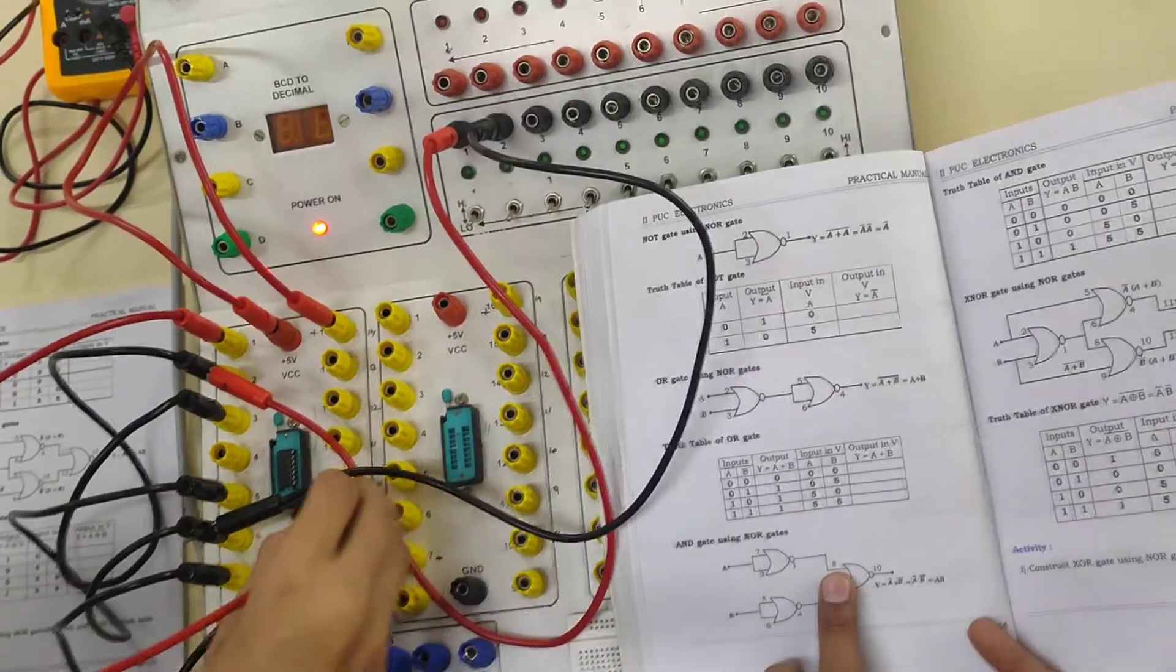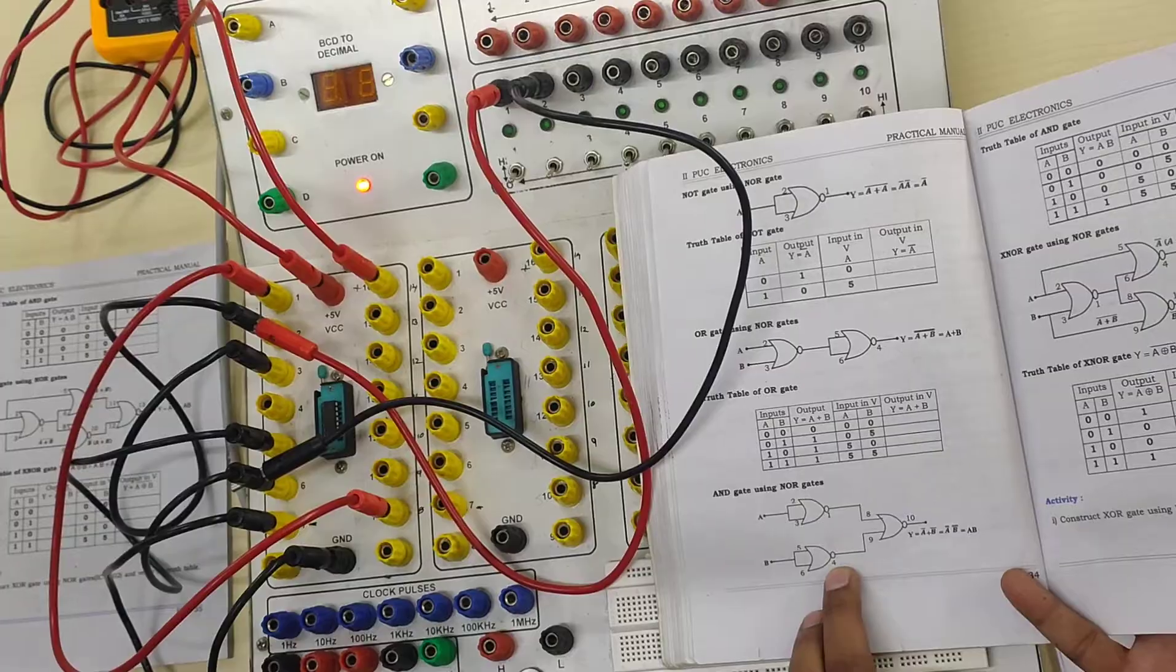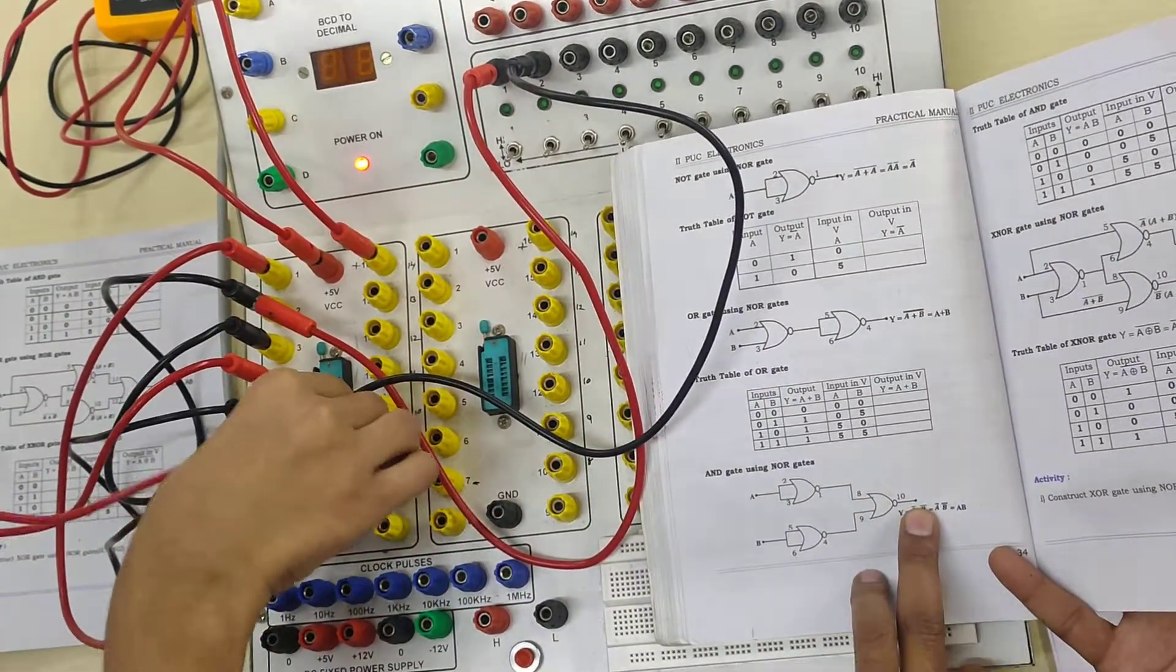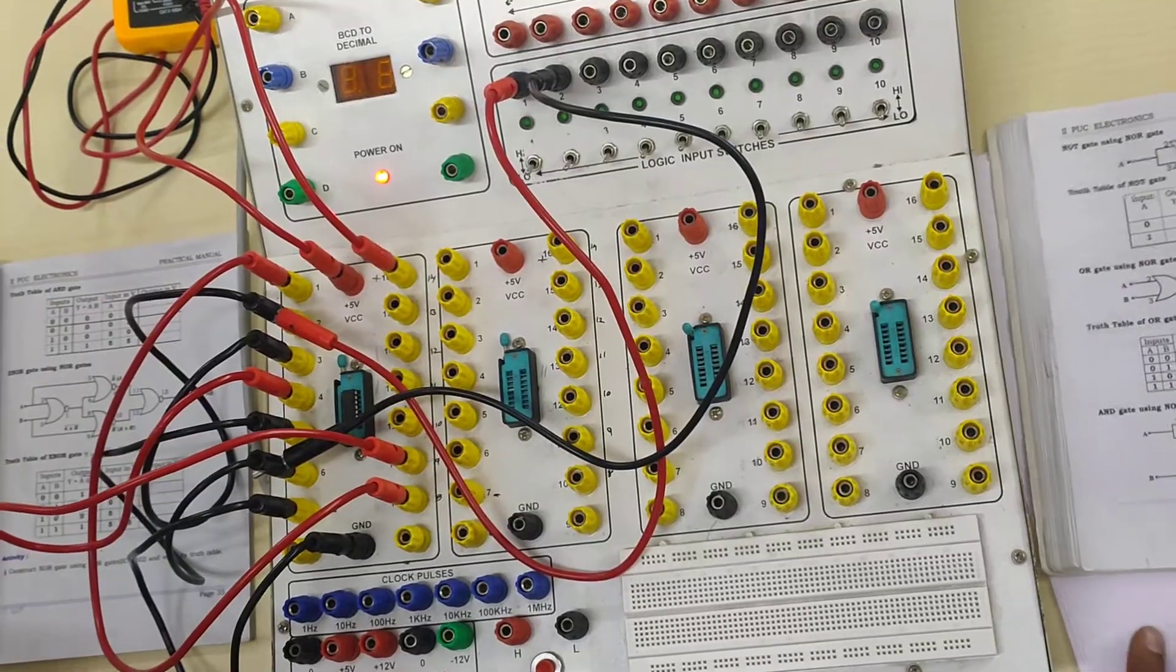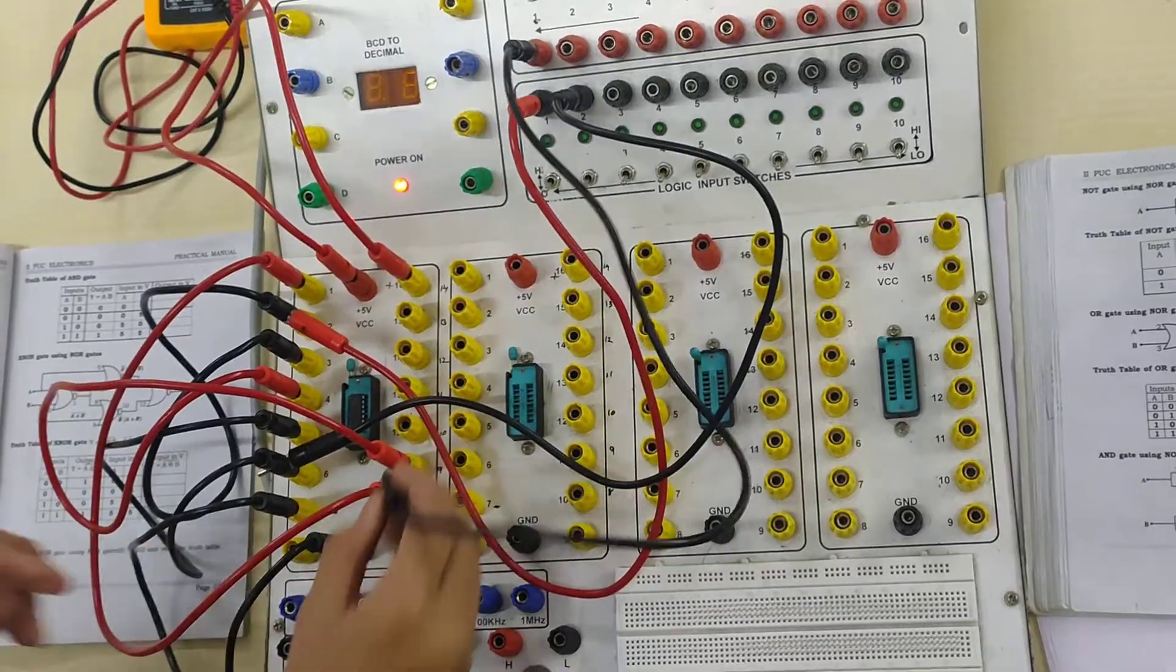Now, from 1 to where? 1 to where? 8. Very good. 1 to 8. From 4 to 9. From 4 to 9. Then from where it is output? 10. 10. Yes, please. 10. Where is 10? This is 10.